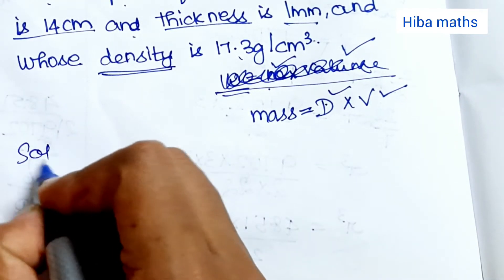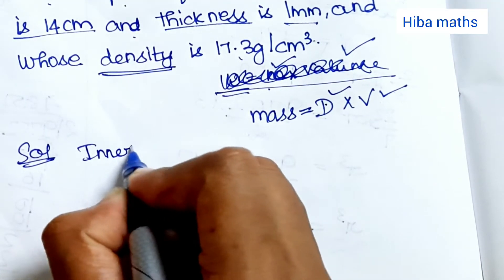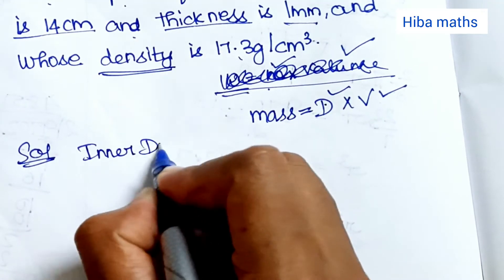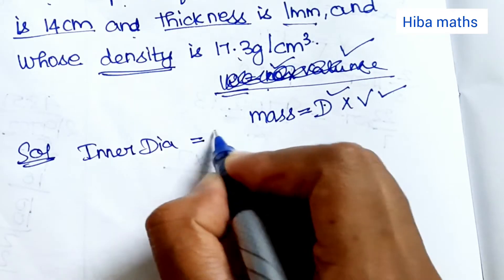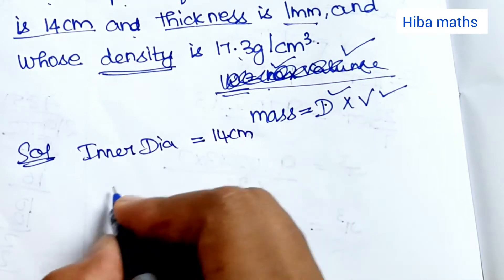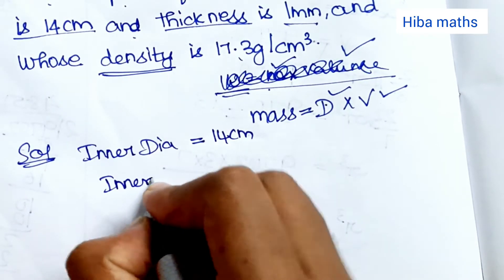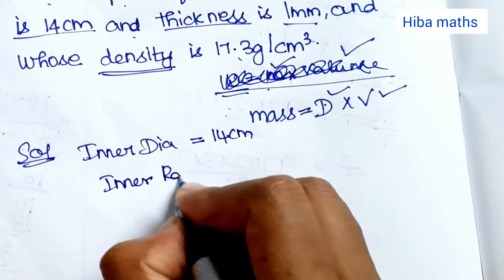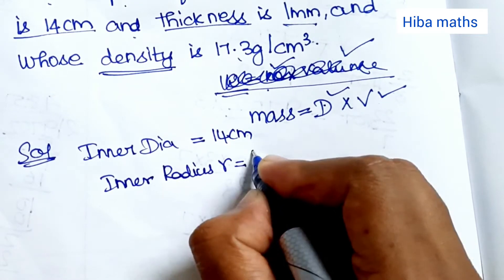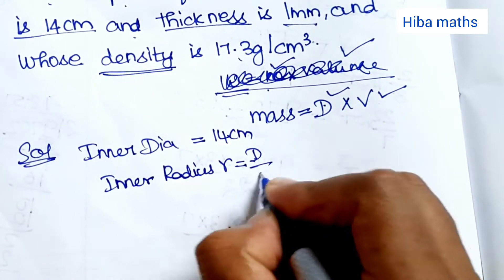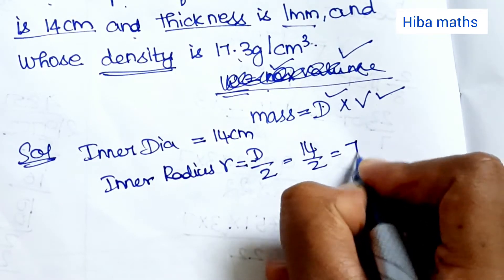In the solution, inner diameter is equal to 14 cm. Then inner radius, small r, is diameter divided by 2, that is 14 by 2.